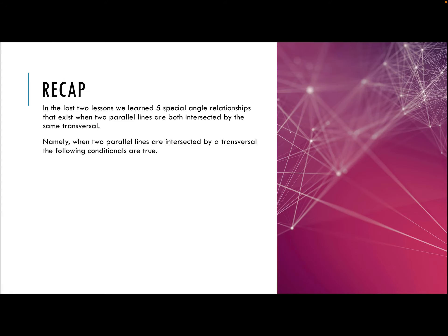In the last couple of lessons, we learned five angle relationships, all based upon having a pair of lines intersected by a transversal. Remember, a transversal is just a line that intersects two other lines. The first thing we determined was that if two lines are parallel and cut by a transversal, then alternate interior angles are congruent.